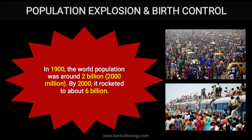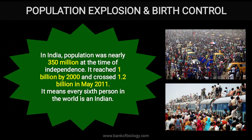Next is population explosion and birth control. In 1900, the world population was around 2 billion, meaning 2,000 million people. By 2020, it rocketed to about 6 billion, meaning 4 billion was added. In India, the population was nearly 350 million at the time of independence. It reached 1 billion by 2000 and crossed 1.2 billion in May 2011, meaning every sixth person in the world is an Indian.